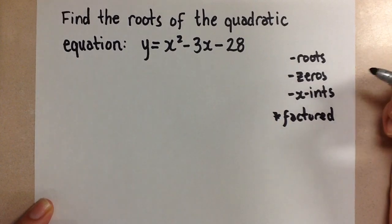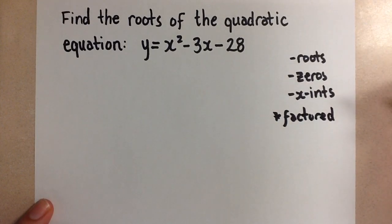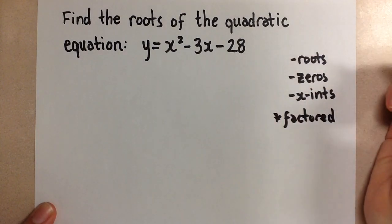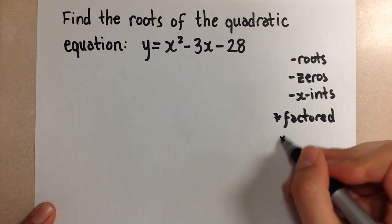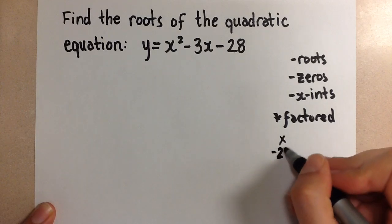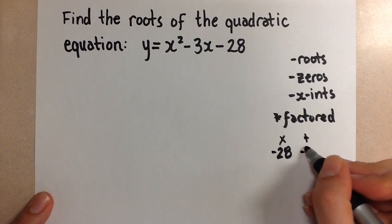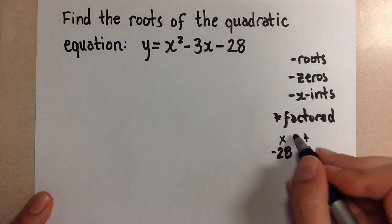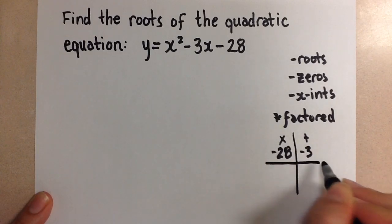We'll do this quickly. If you need a reminder on how to factor trinomials, then go visit one of my other videos and you can review how to factor there. So remember we need to find two numbers that multiply to the number negative 28 and add to the number negative 3. So we get the negative 28 here and the negative 3 from here.